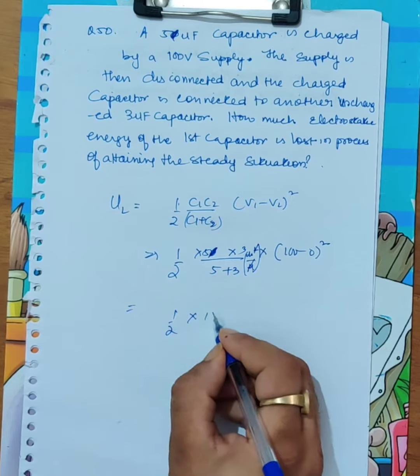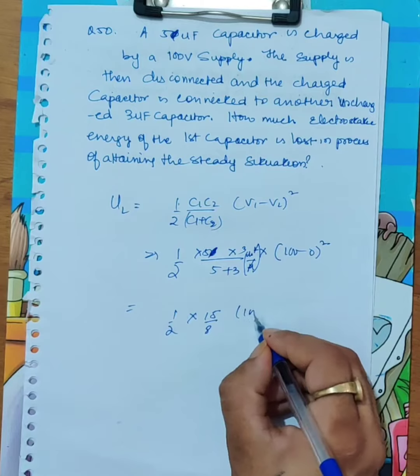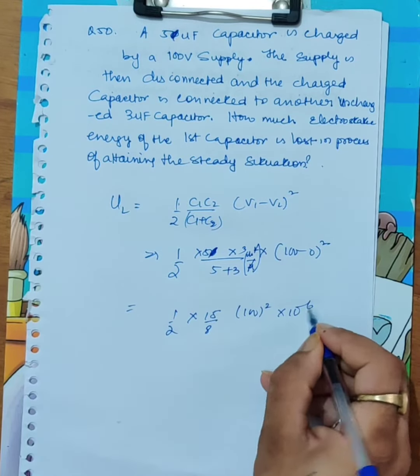Now, how much is it? 15 by 8. This is 100 squared into 10 to the minus 6.